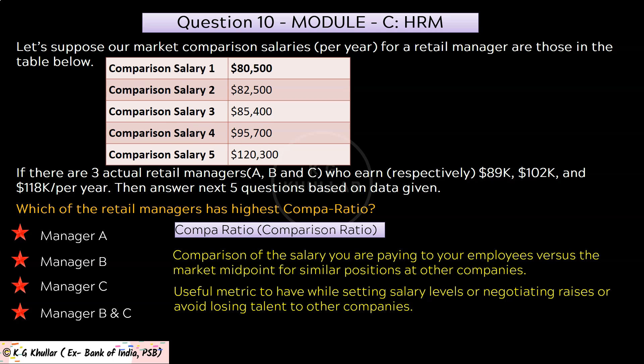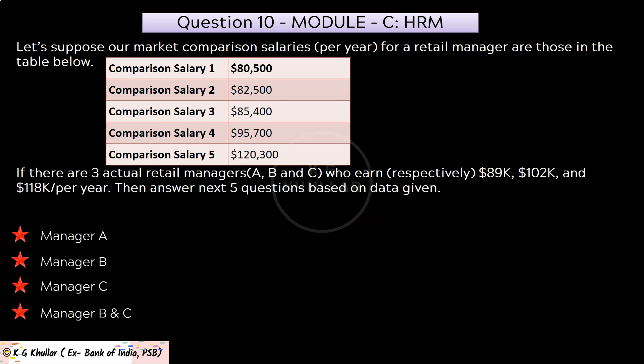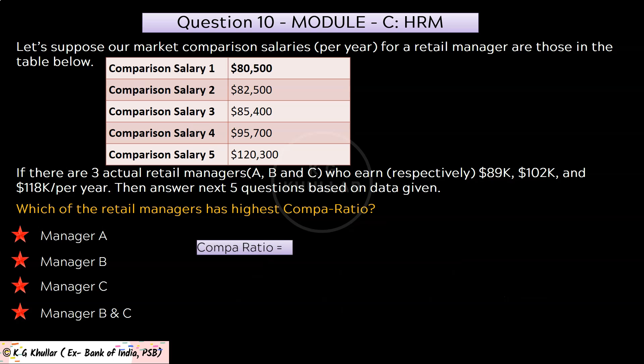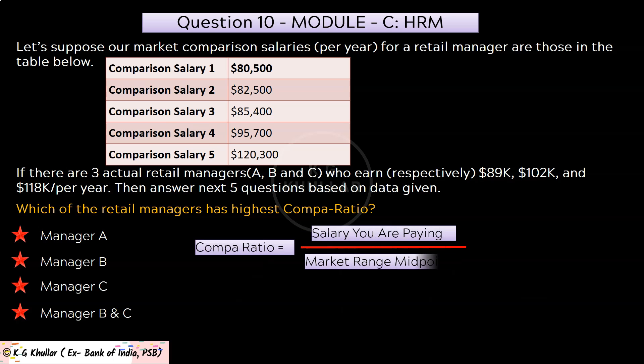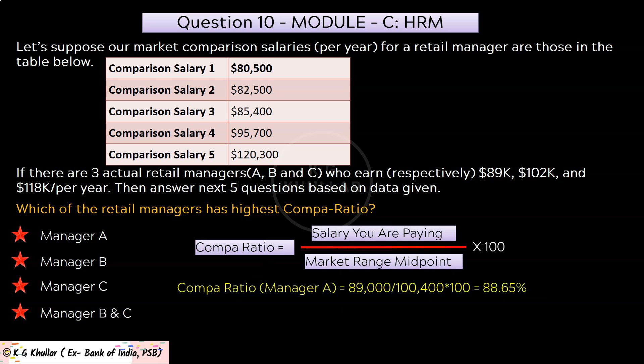The formula to calculate compa ratio is: Compa Ratio = (Salary you are paying / Market Range Midpoint) × 100. As you can see, it is calculated as a percentage.